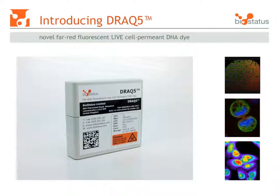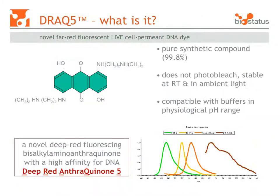DRAC5 is a live cell permeant, high affinity DNA intercalating dye. It is a small molecule with fluorescence in the far red. It is conveniently water soluble and highly photo and chemically stable.